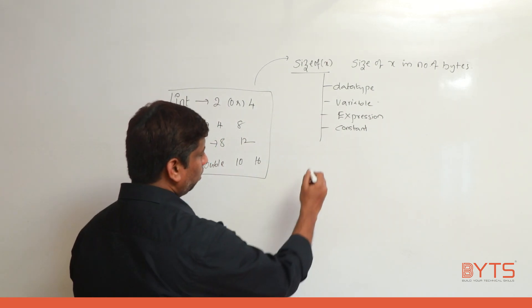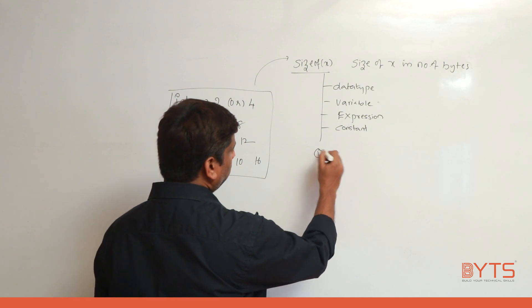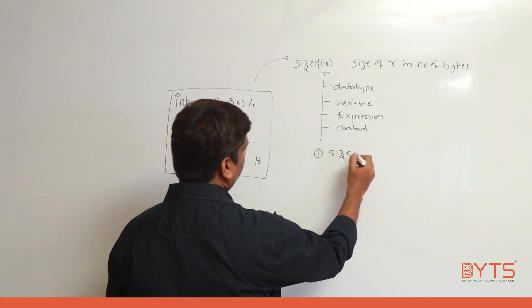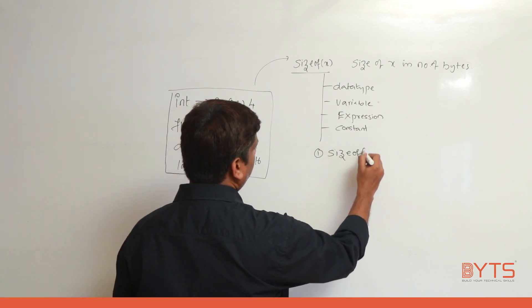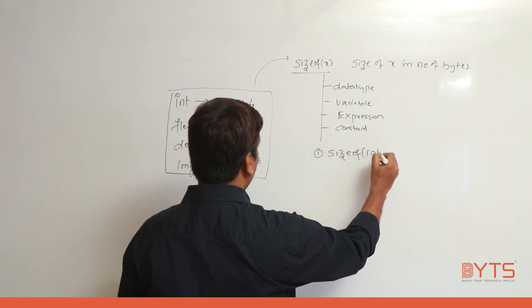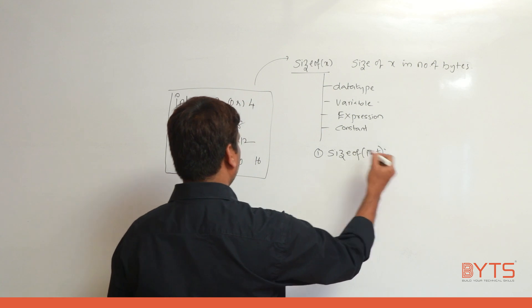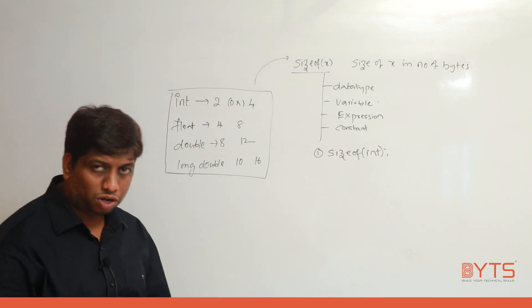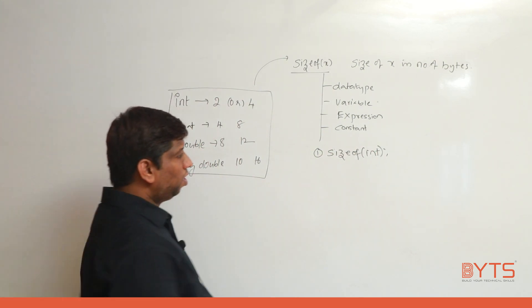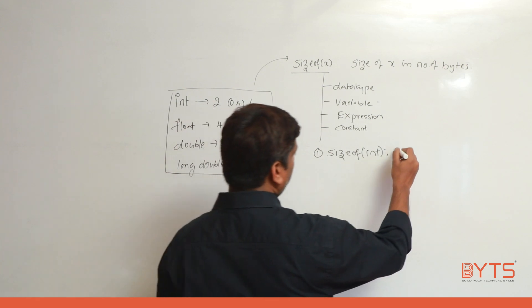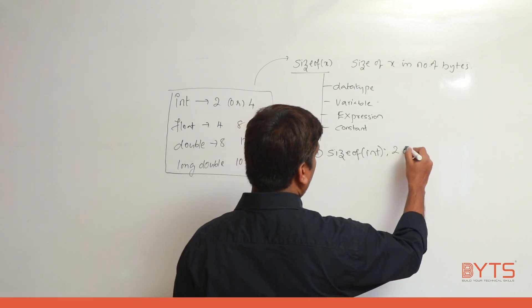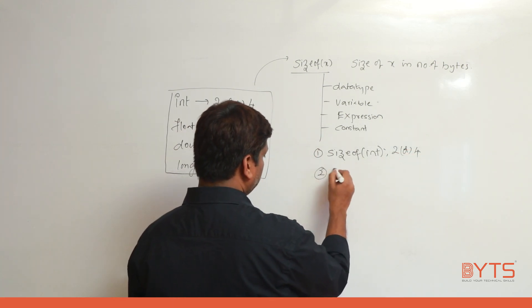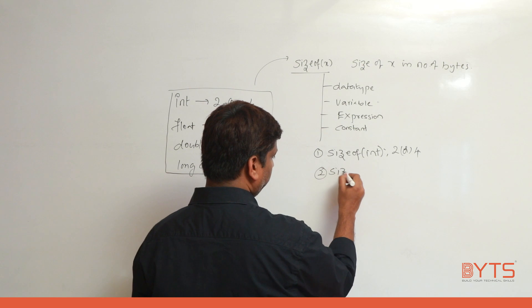First example: sizeof(int). Whenever you run this statement, the answer will be different from machine to machine — it could be 2 or 4. Next, sizeof(float).